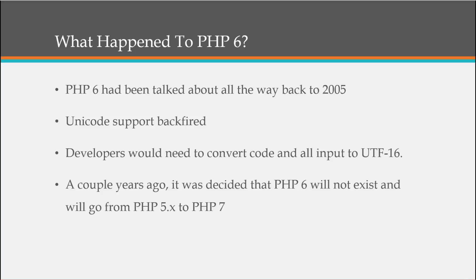There was actually a huge debate on whether the next version should be called 6 or 7, and they went with 7 because PHP 6 had already been established as the version with Unicode support and all the baggage that came with it. So it goes right from PHP version 5 to 7. There's a lot of articles and information online about this too.